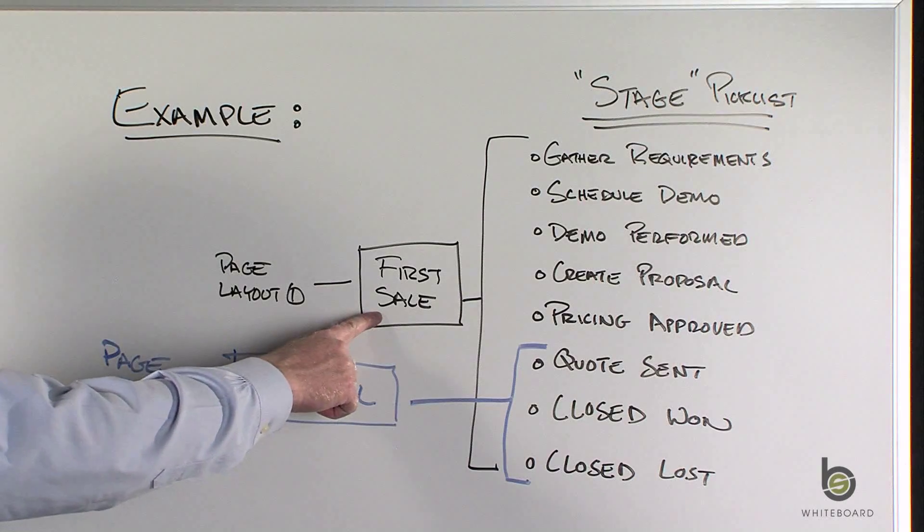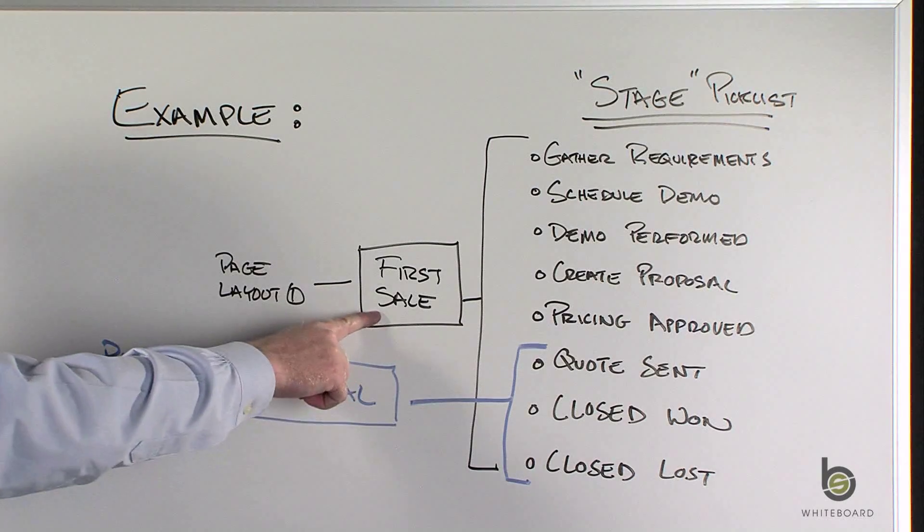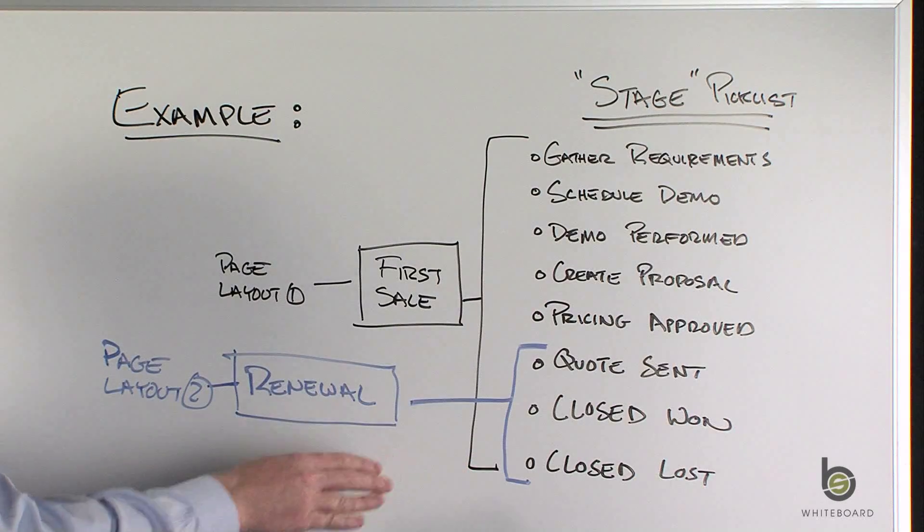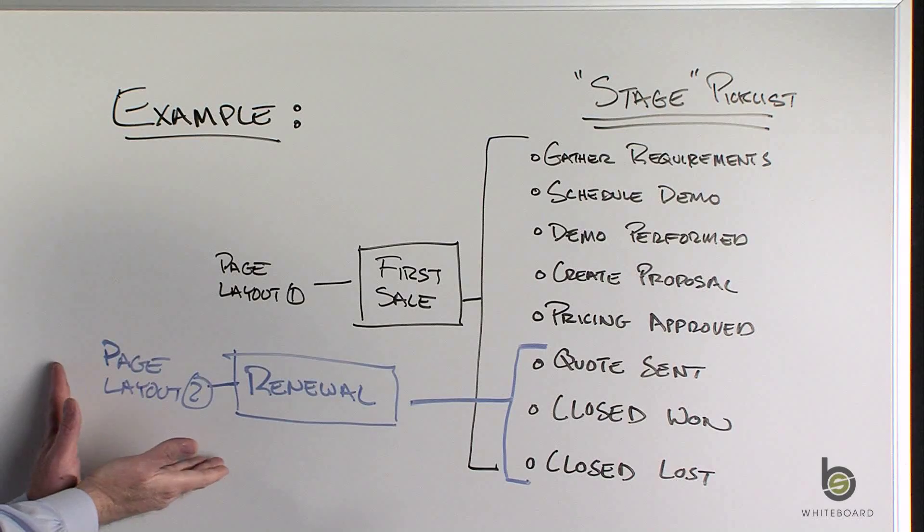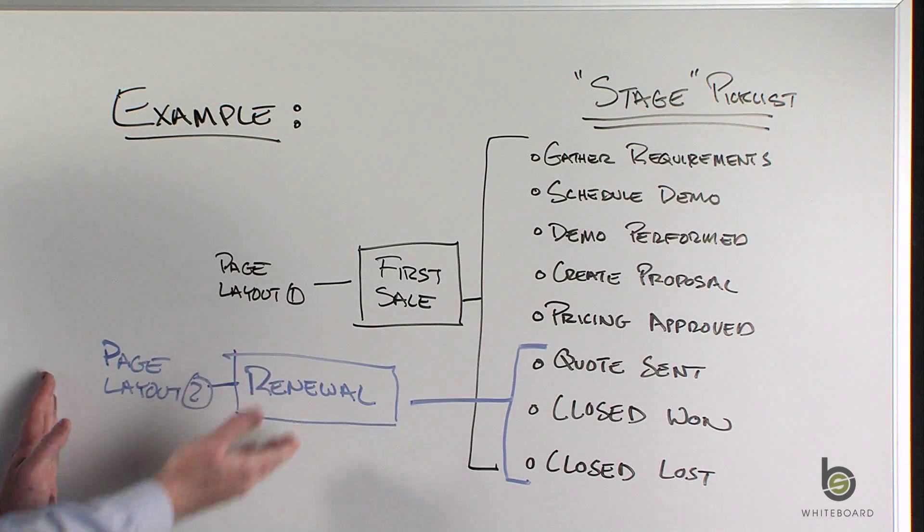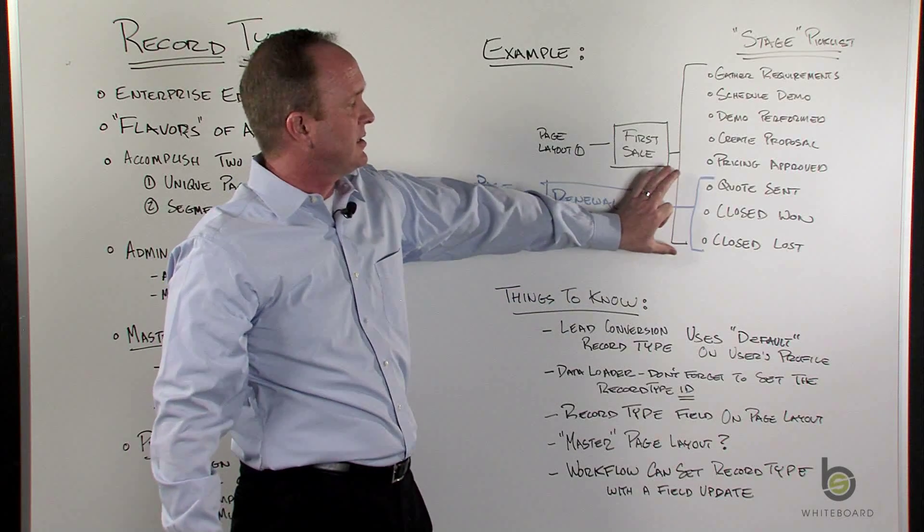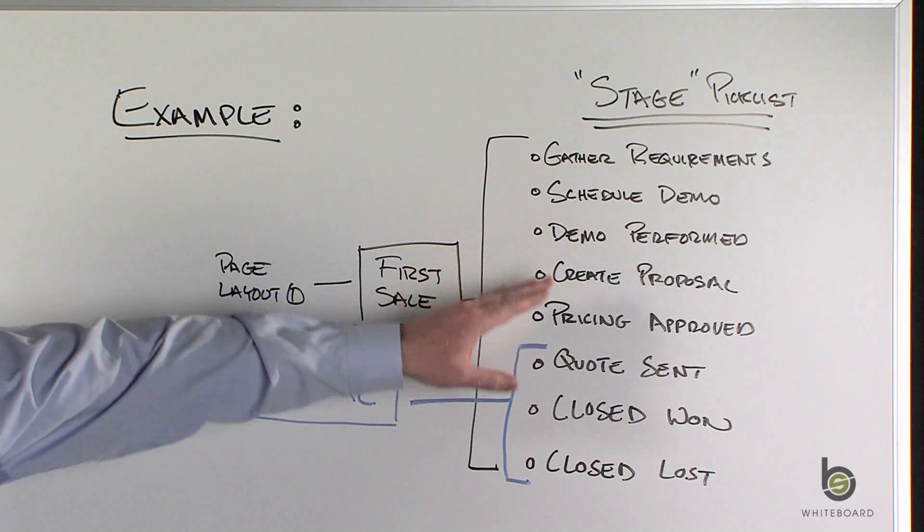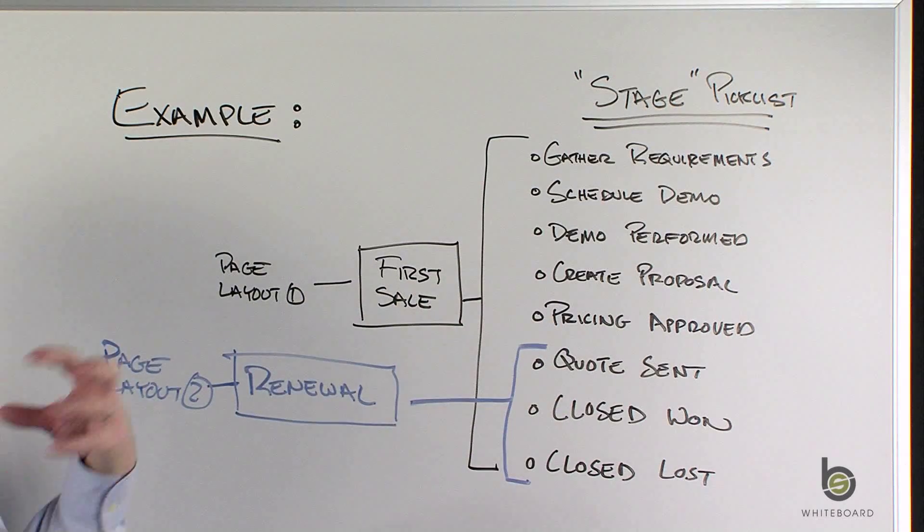So I have two flavors of opportunity that I have at my disposal. I have the first sale process. And when we do a first sale, we have to go through all these steps in our Opportunity Stage. I have a second record type called renewal. And the renewal process is only three values of this list.